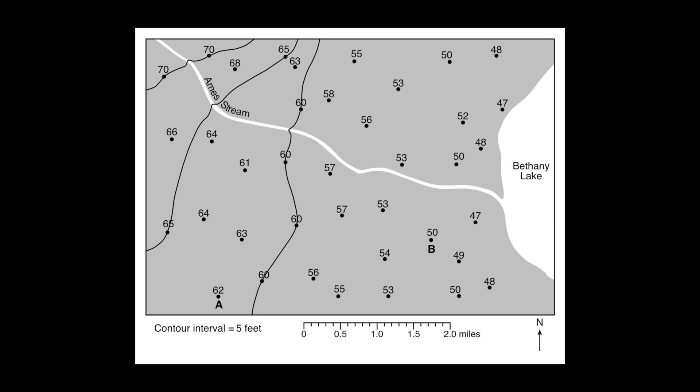As it is right now, it's not terribly useful because the contour lines have not all been drawn in. We see a few of them — the 70, 65, and 60 lines are done — but they're not all there. So we don't get a good complete picture of what the landscape actually looks like. Our job is going to be to draw in the remaining contour lines to help make sense of the area.